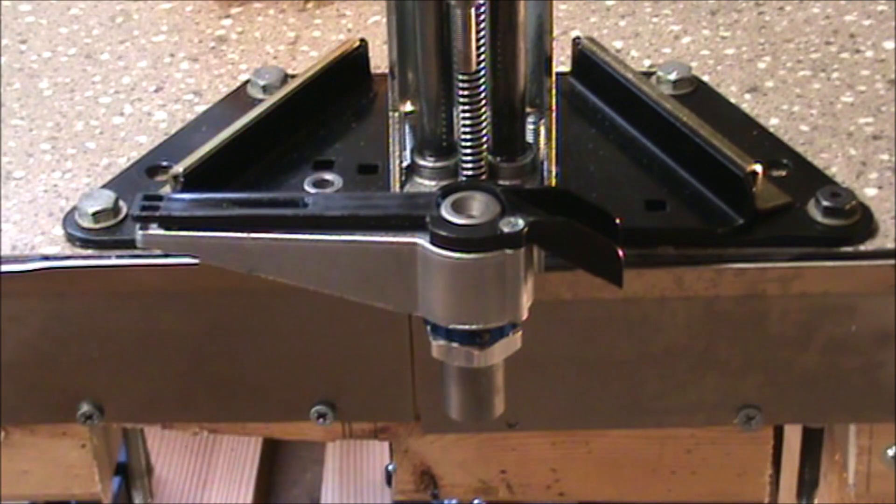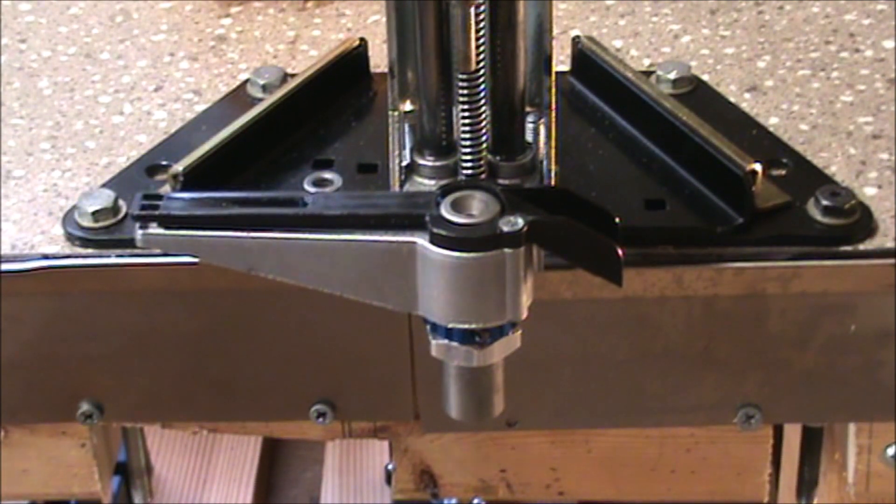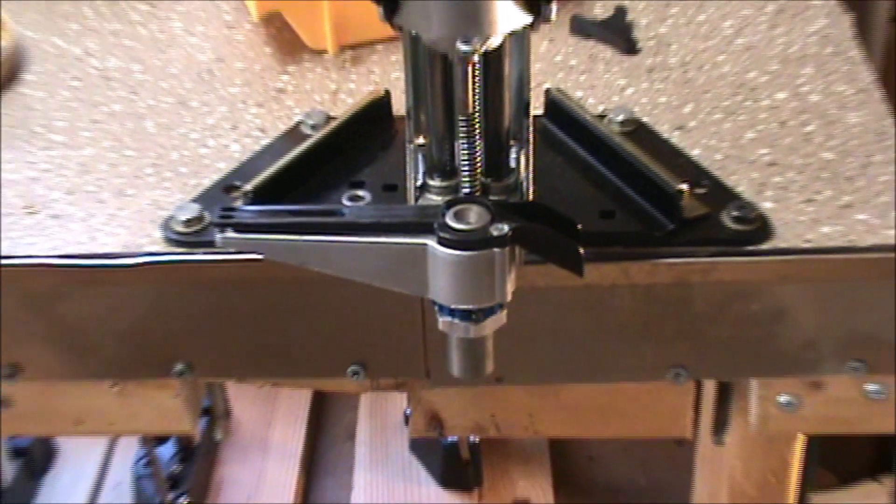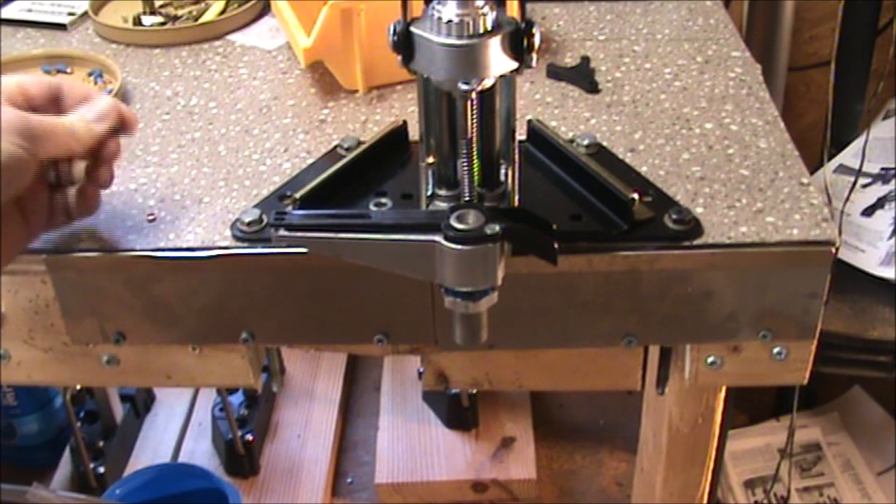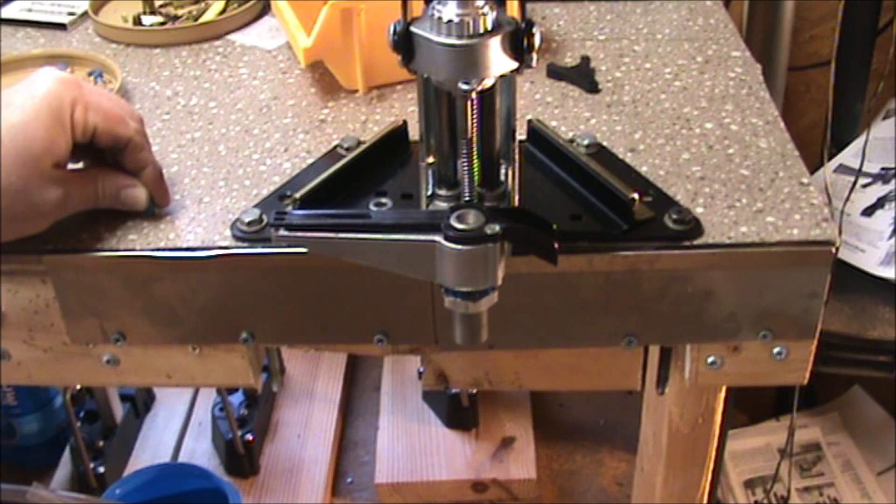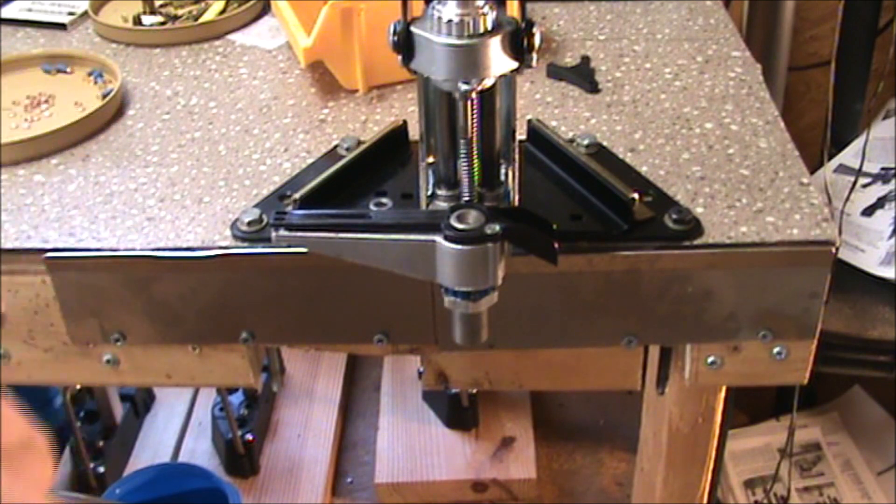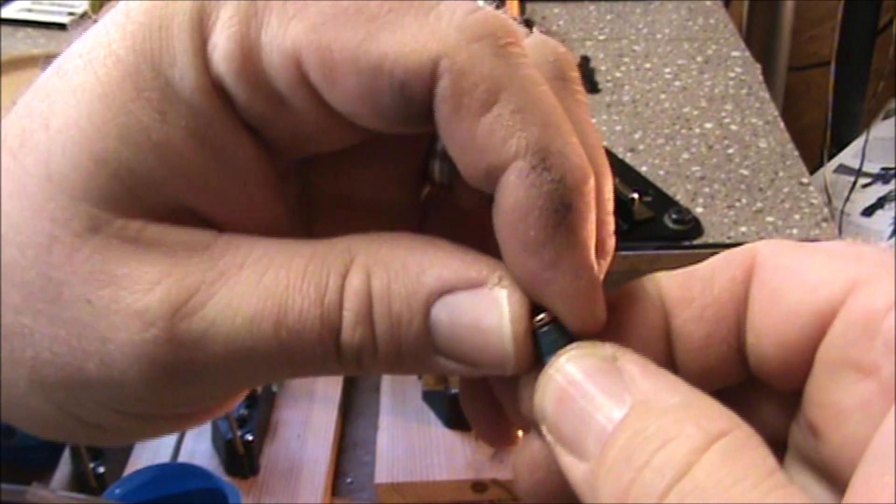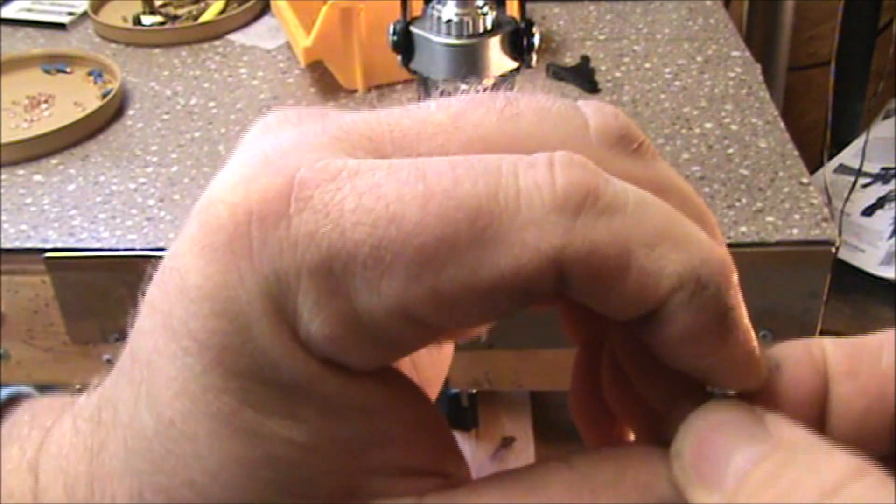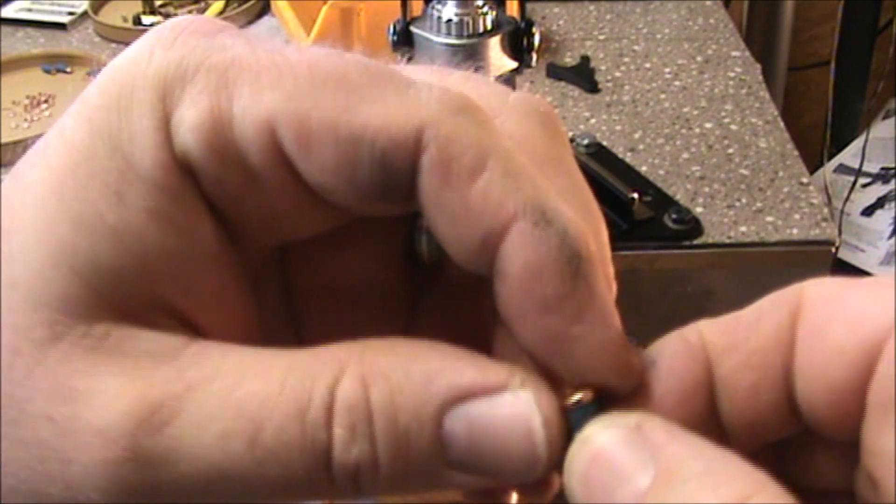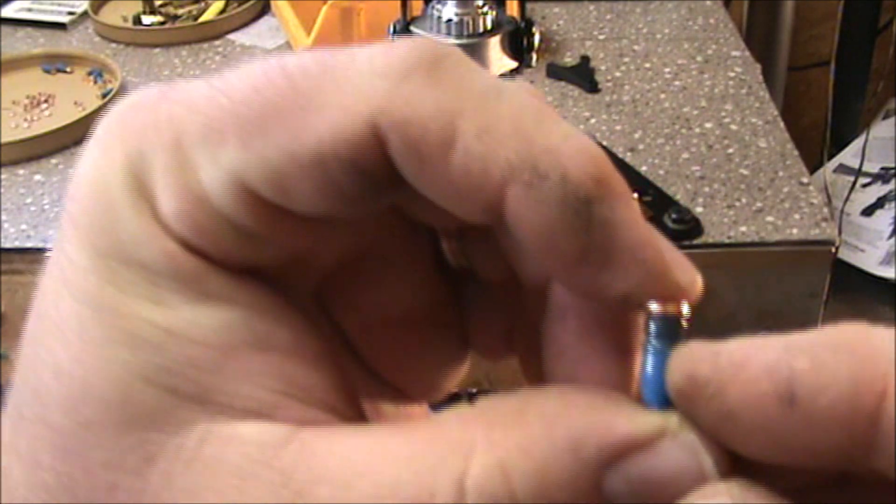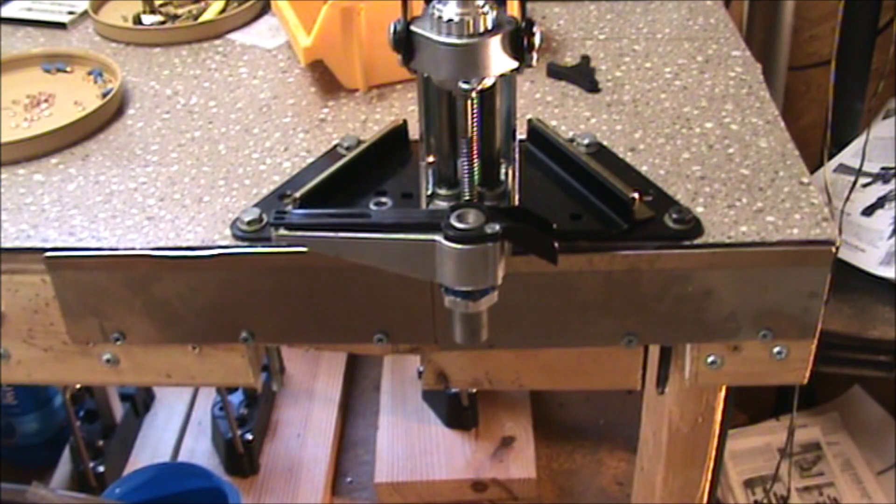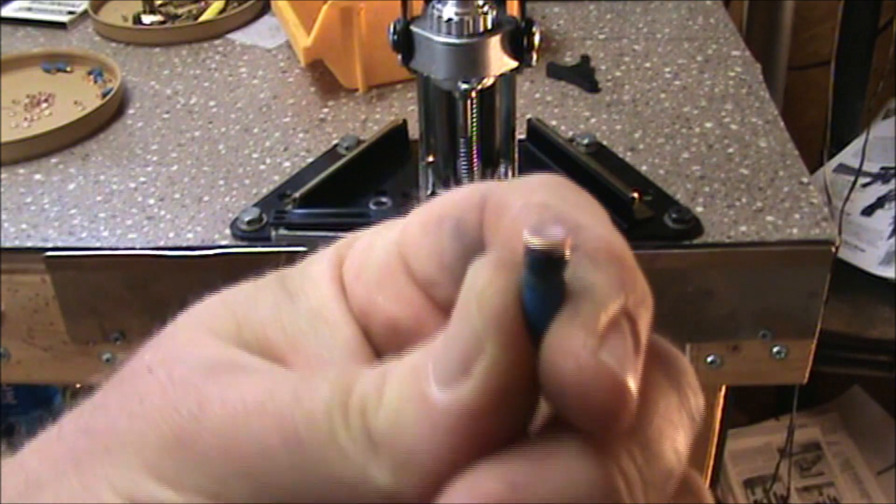We'll put on another gas check, just sit these on there like so. And you want your gas check to be straight on your bullet. If it's sitting cocked like that, it won't sit flush on there. All right, there we go. Now it's on there flush.